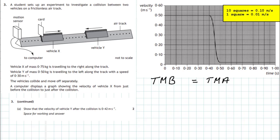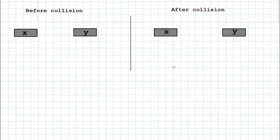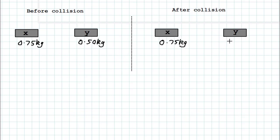To solve this problem, set up a small table containing all the data. The table has columns for before and after the collision, for vehicles X and Y. Vehicle X has a mass of 0.75 kilograms and vehicle Y has a mass of 0.50 kilograms. Since no mass falls off the vehicles, we can assume the masses are the same before and after the collision.